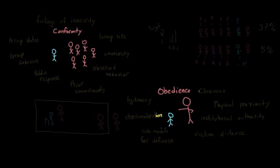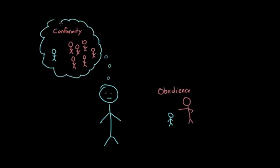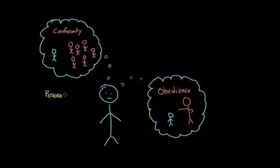And one thing that you might be wondering after hearing all of this is whether or not there is a certain type of person who is more likely to conform or more likely to obey. And the answer seems to be no. There is no one personality that leads people to be more susceptible to groups or to authority.